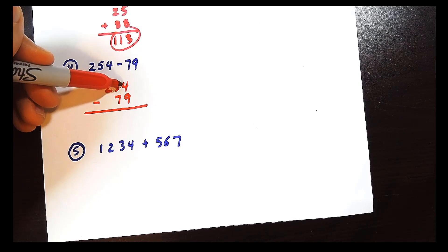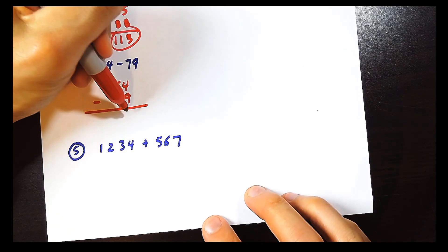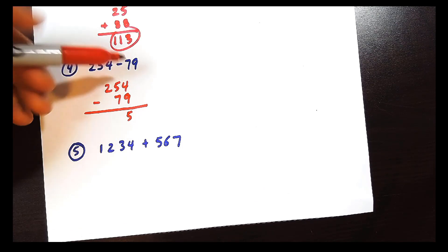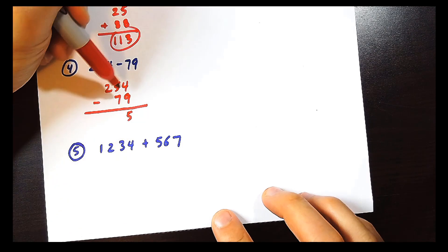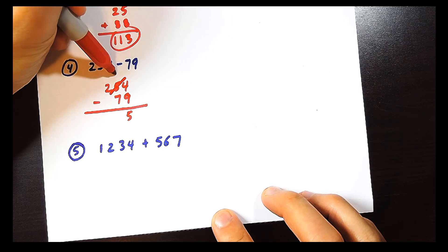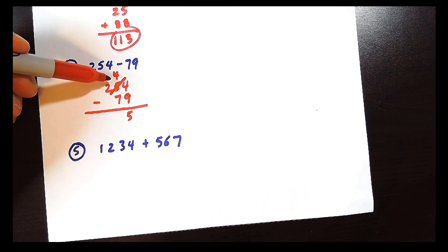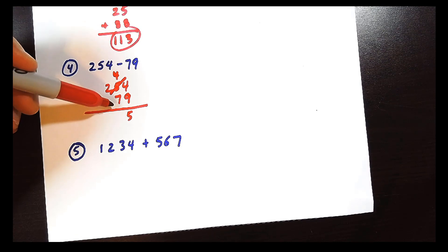So right now, treat this like a 14. 14 minus 9 is 5. And because we had to treat that like a 14, we borrowed energy from the 5. So the 5 gets weakened and becomes a 4.